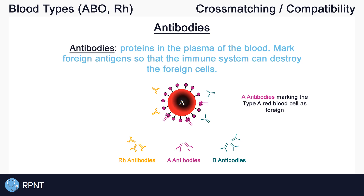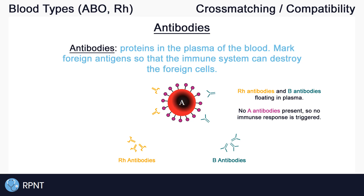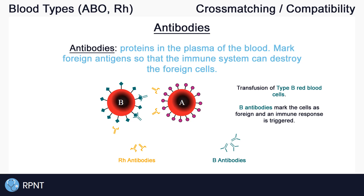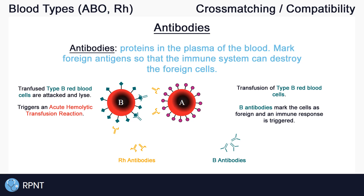If my blood type is A, I wouldn't want my immune system or my antibodies to attack my own red blood cells. So naturally my body doesn't produce the right antibodies to do this. If my blood type is A and I have lots of A antigens on the surface of my blood cells, then I won't have any A antibodies. So whenever my immune system sees blood with A antigens it accepts them as my own cells, even if they came from someone else with type A blood. However, I will have B antibodies. If I ever receive blood from someone with type B blood which has B antigens, then my B antibodies will mark the foreign blood for destruction. This would be called an acute hemolytic transfusion reaction, which can be life-threatening.